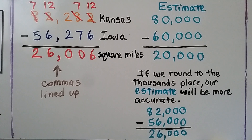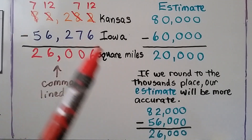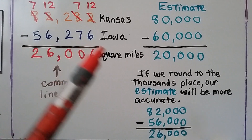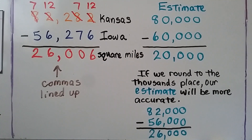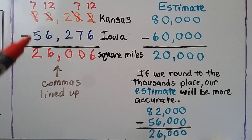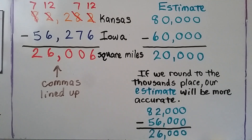Now we can estimate to see if our answer is reasonable. The 2 told the 8 to stay the same, and all the other digits became 0, so we have 80,000. This 6 told the 5 to go up to a 6, so we have 60,000. 80,000 minus 60,000 is 20,000. But if we round to the 1,000th place instead of the 10,000th place — rounding to the next place value to the right — our estimate will be more accurate.